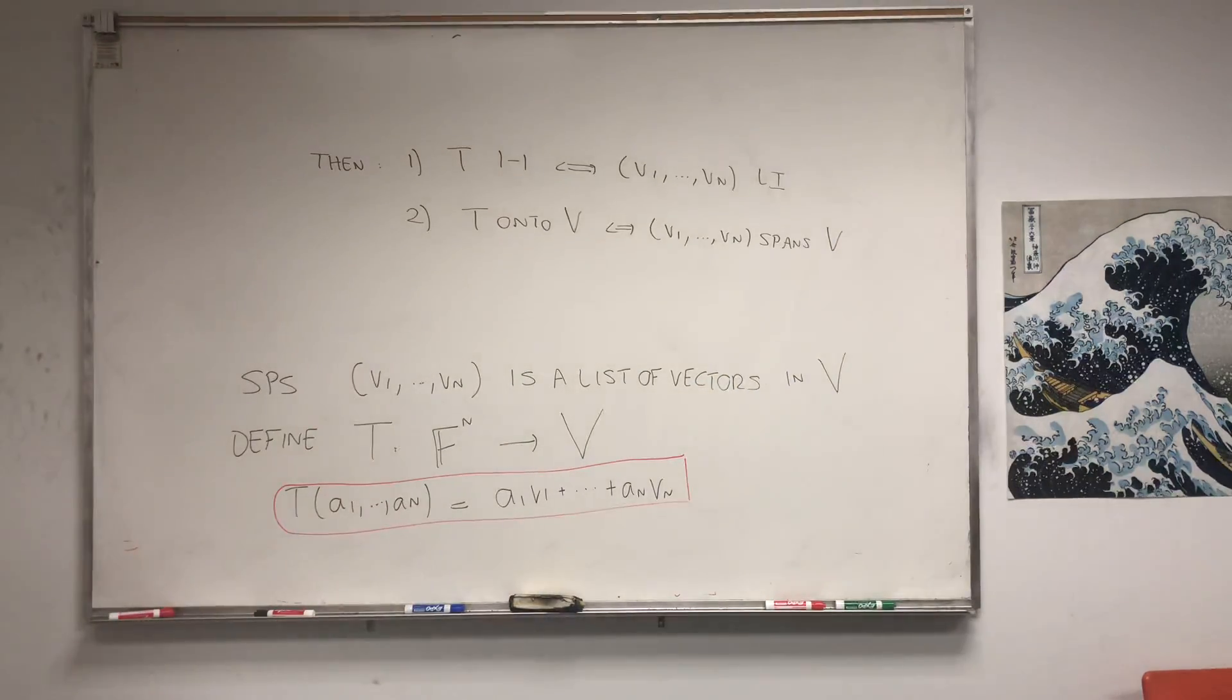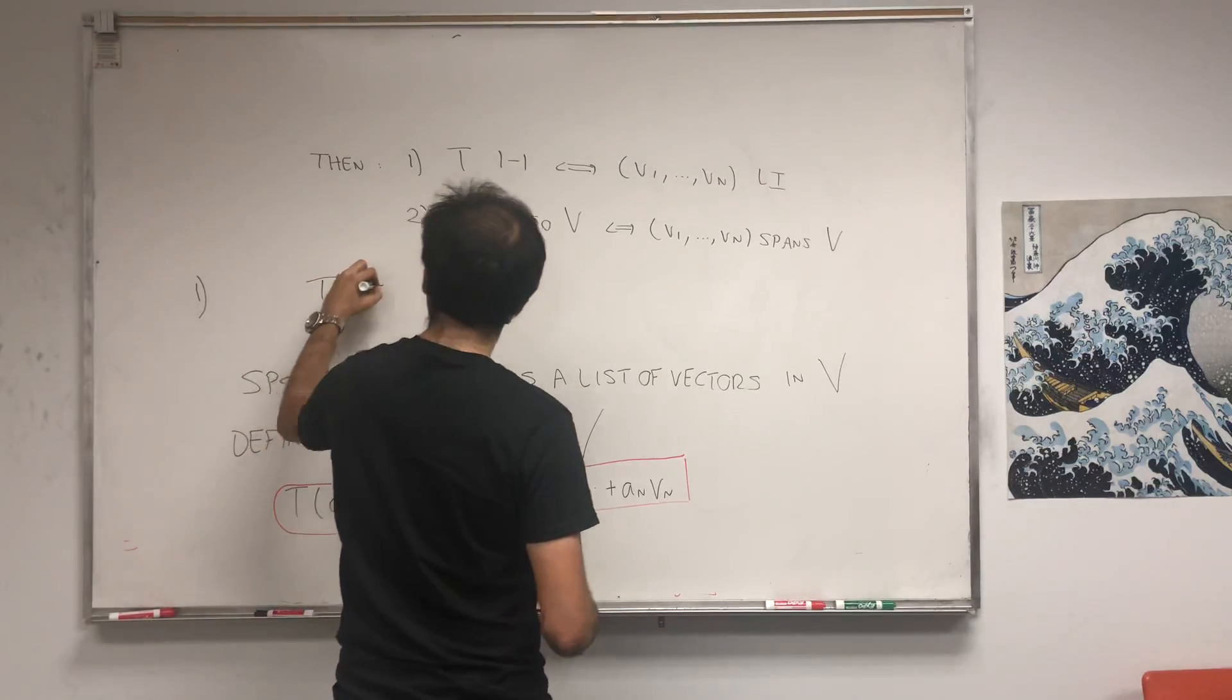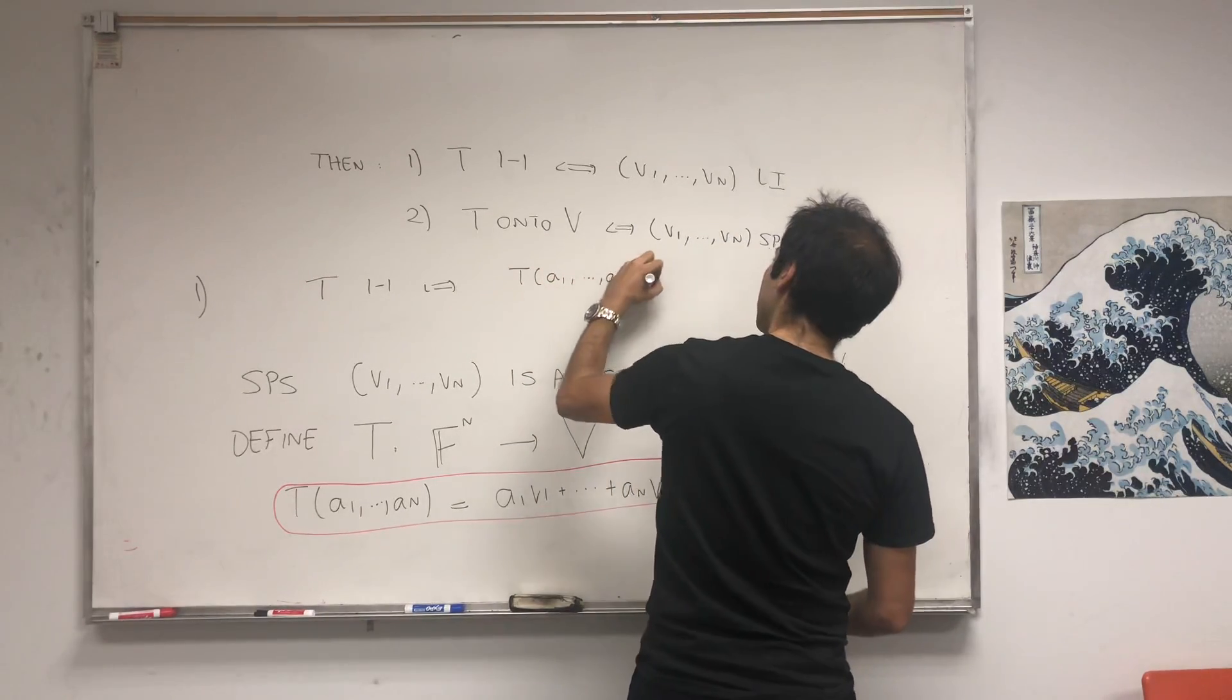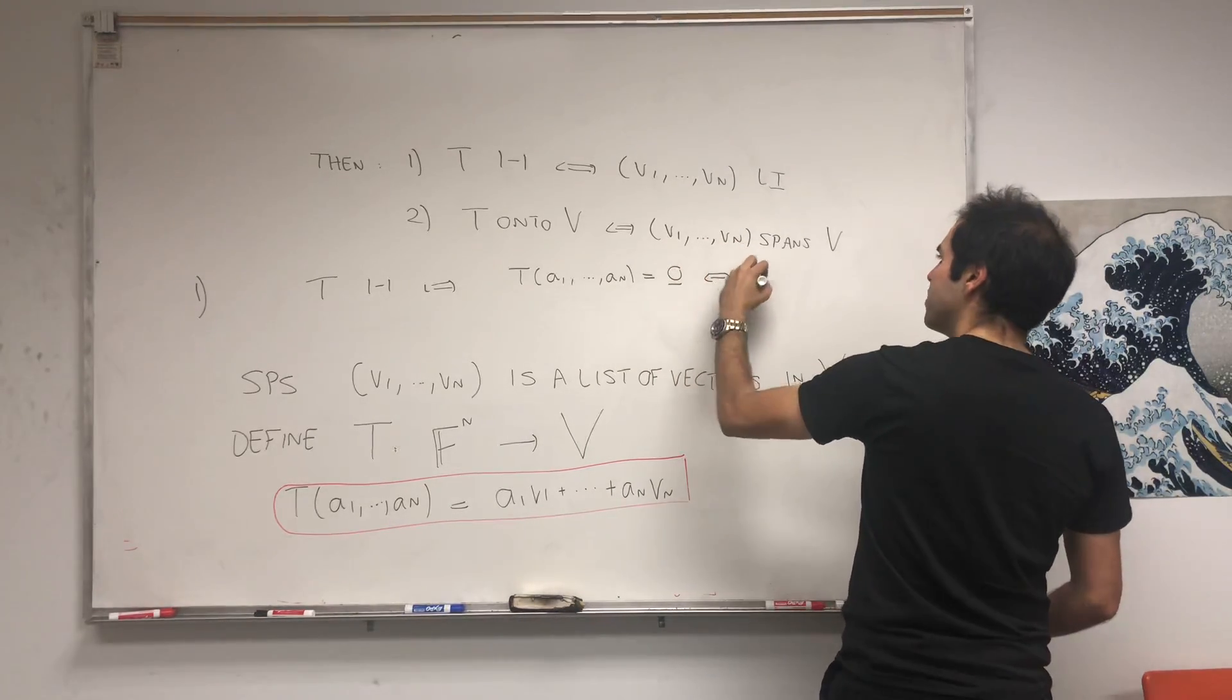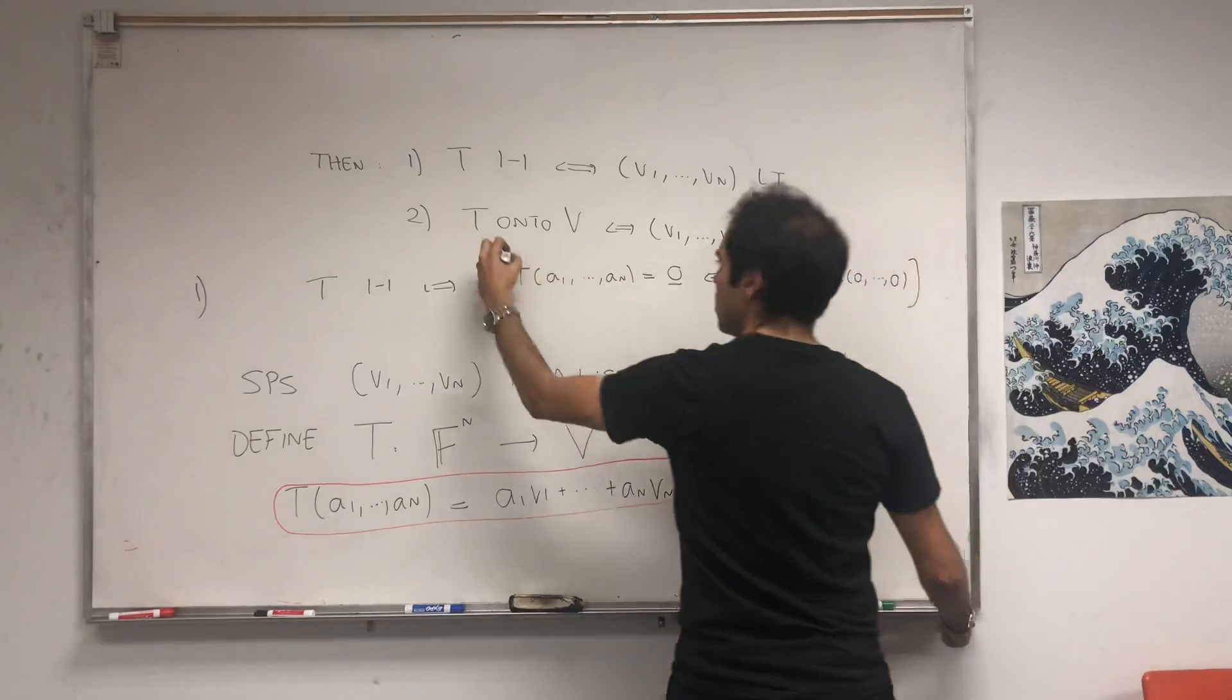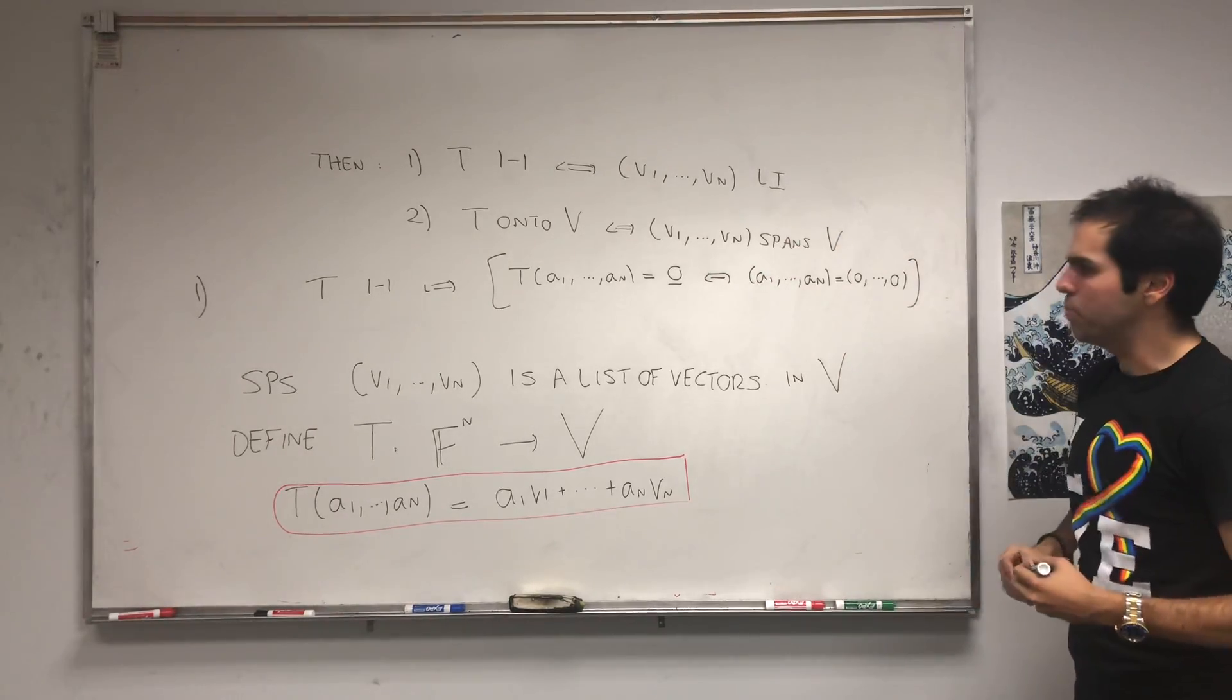And the proof, luckily, it's not too complicated. It's an if and only if proof. Because what does it mean for t to be 1 to 1? That's if and only if the only way to get the 0 vector is if all the a1s is a 0 vector.